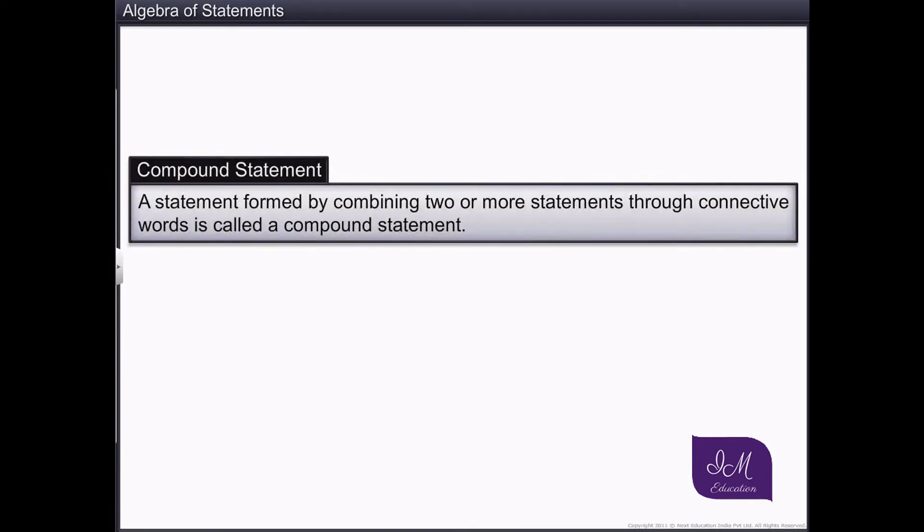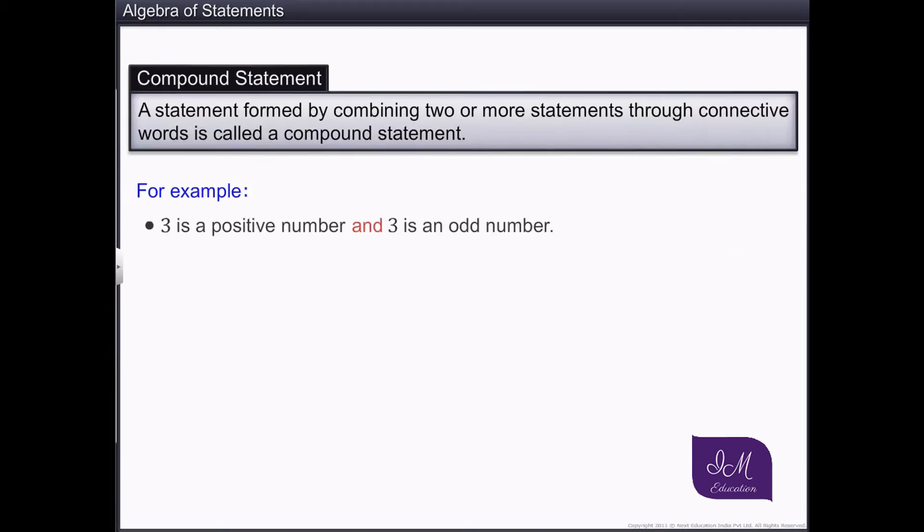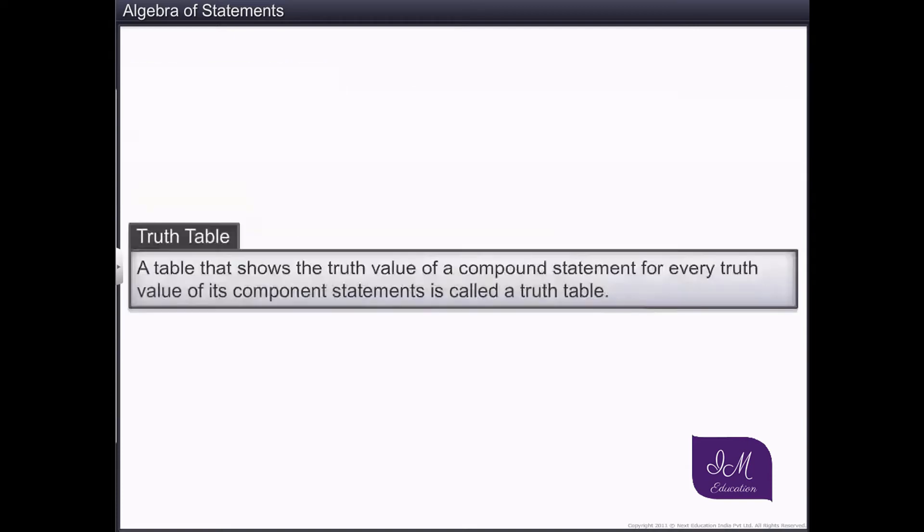A statement formed by combining two or more statements through connective words is called a compound statement. The truth value of such a compound statement depends upon the truth values of its component statements. The table that shows the truth value of a compound statement for every truth value of its component statements is called a truth table.